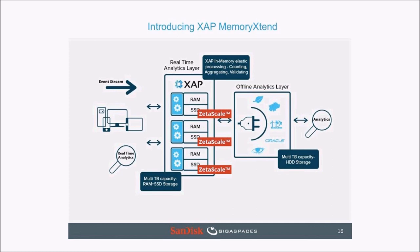That gives us the ability to store tens or even hundreds of terabytes of data on the data grid, whereas before we could only get to just a few terabytes — and that too was very cost-prohibitive. So it brings a whole new set of use cases and applications. The offline analytics tier — the long-term storage, data crunching, data analysis from the top-left corner of the diagram — is still there; we're just making the real-time analytics layer a lot more scalable and able to handle much larger data capacities.